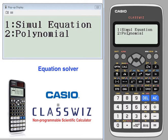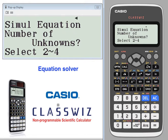You have two choices: simultaneous equations or polynomials. Let's try simultaneous equations. Number of unknowns can go from two to four. We're going to go with two.